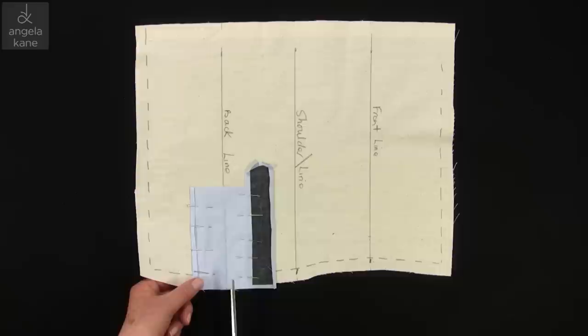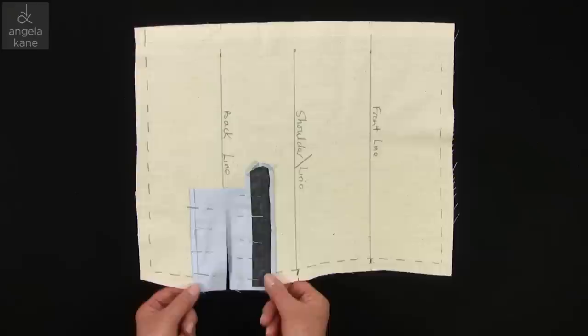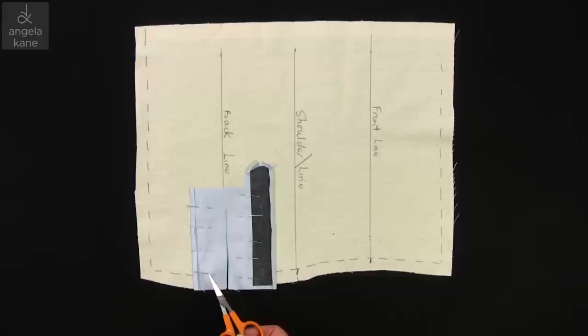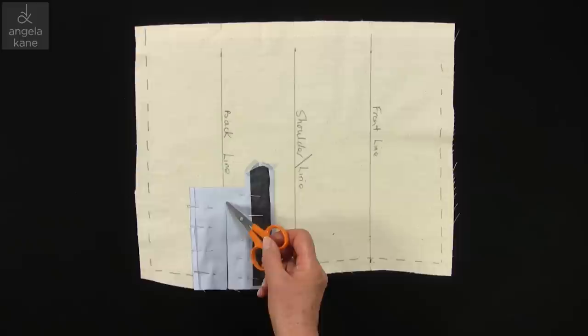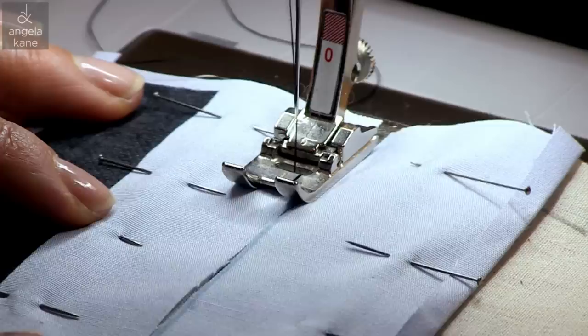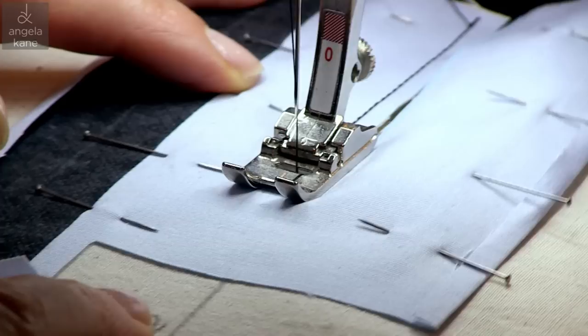So slash up to the point through both layers. Taking careful note of the measurements, we will machine a half-inch seam line on this side, across the top about a half inch above the slit, and back down the other side but this time taking a quarter-inch turning. This difference in seam allowance is important for centralizing the bottom placket behind the larger top placket.